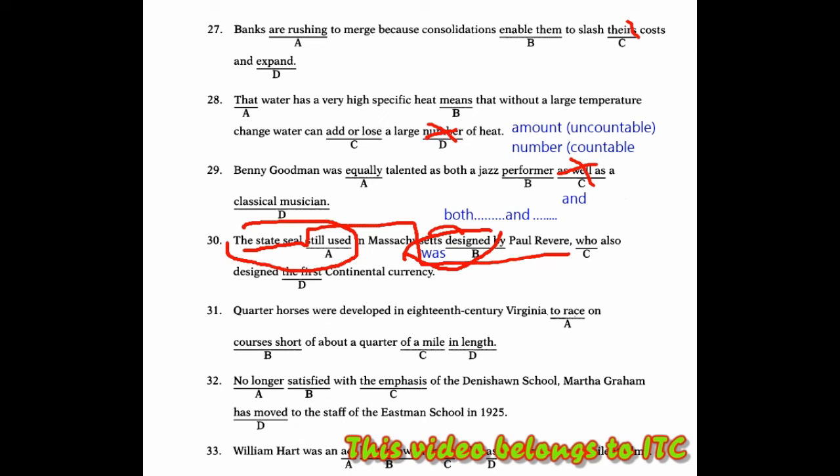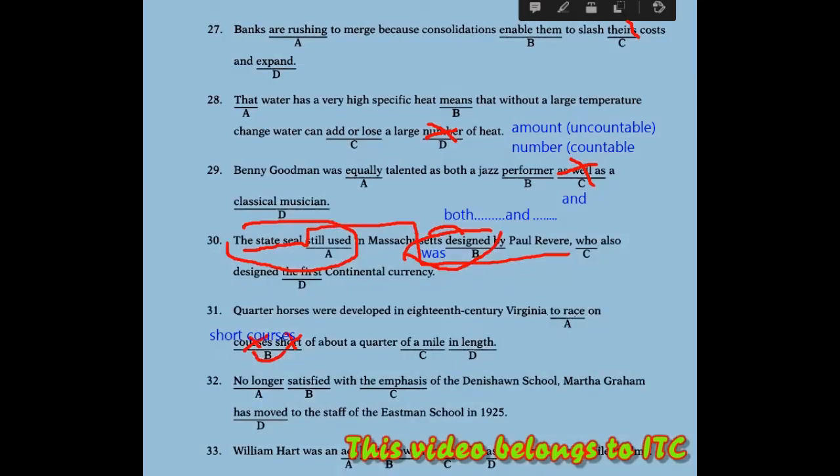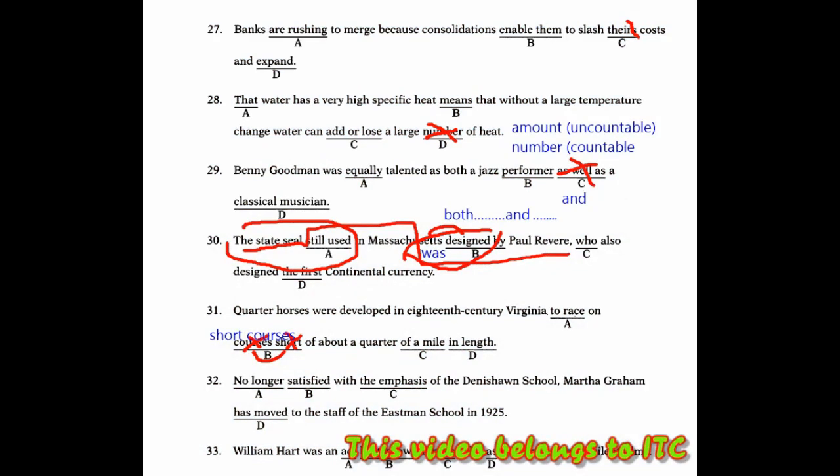Then in number 31, Quarter courses were developed in 18th century Virginia to race on short courses. This part B is wrong. This part is reversed. Why is it reversed? Because adjectives should be placed before nouns. So it should be 'short courses', not 'courses short'. That part should be there. So it should be short courses. This is the short courses part. It's not courses short. This sentence part is reversed.